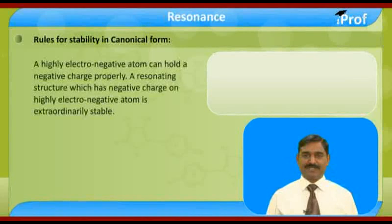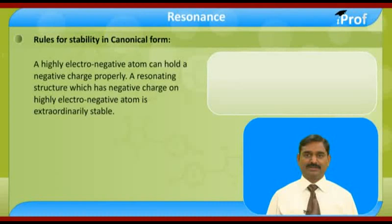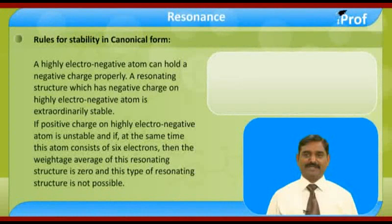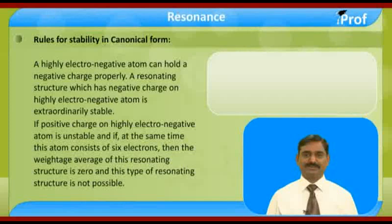A highly electronegative atom can hold a negative charge properly. A resonating structure having a negative charge on a highly electronegative atom is extraordinarily stable. If a positive charge is on a highly electronegative atom, it is unstable, and if that atom consists of 6 electrons, the weightage average of that resonating structure is 0.